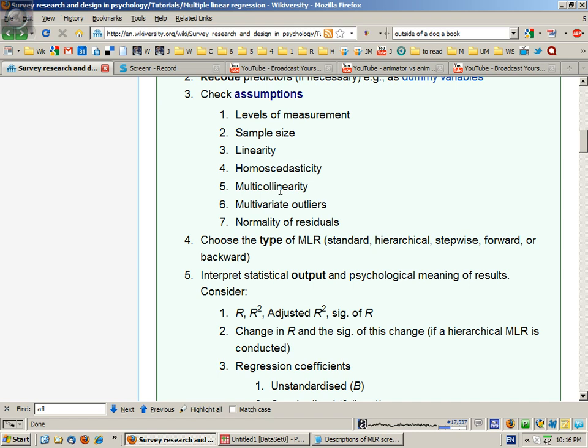We also check whether there are multivariate outliers, which is where one or more cases have an unusual combination of responses to the variables being used in the analysis, and whether the residuals are normally distributed. The residuals are the vertical distance between the predicted scores and the observed scores. We'll talk a little bit more about those in a moment.